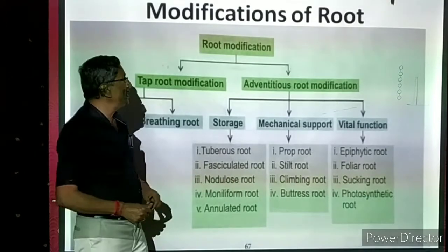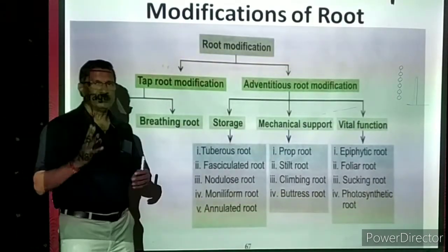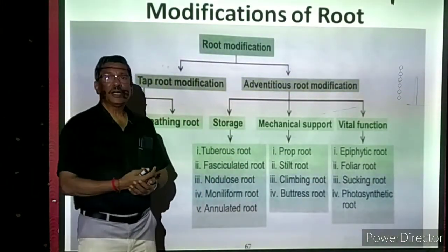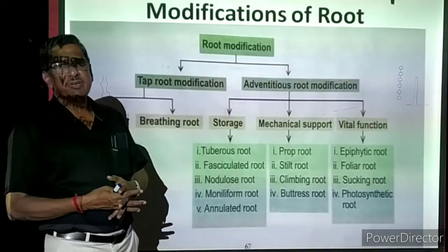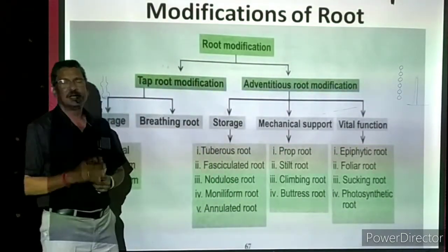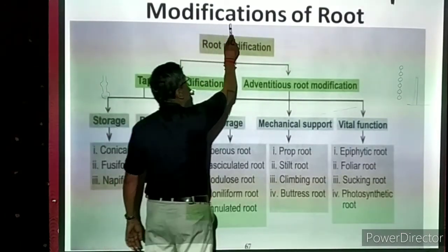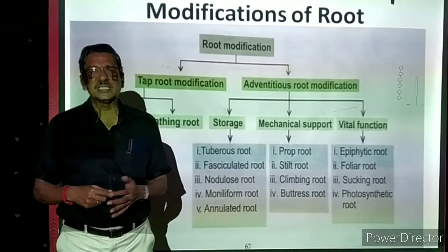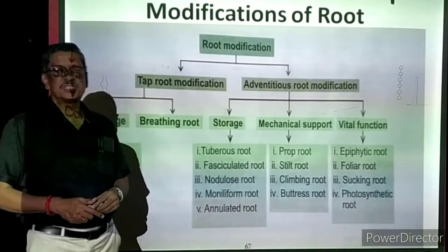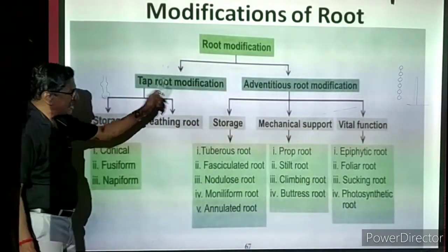Now we look at modifications of roots. Modification means change in the structure and form. The roots change their shape — for example, a normal root is thin and long, but beetroot is very stout and does not look like a normal root at all. Modification means change in shape, size, and structure of the root. Why do they change? To perform additional functions like support, storage, and climbing.